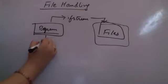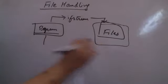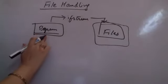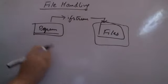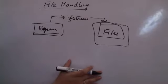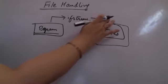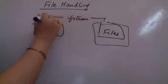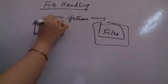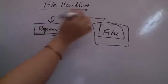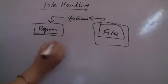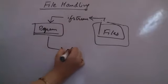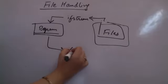The input file stream brings data from the file into the program, and then you have an output file stream that sends data from the program out to the file.